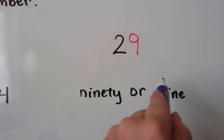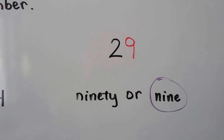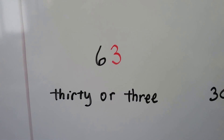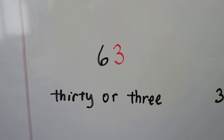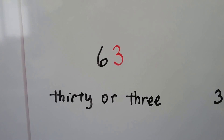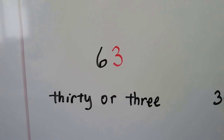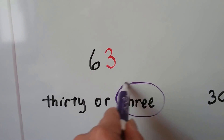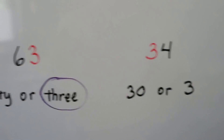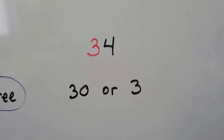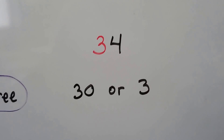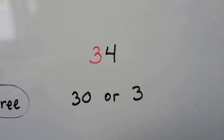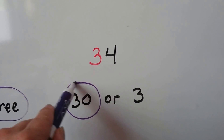How about this one — is the nine ninety or a nine? If you said nine, you're correct. It's in the ones place; it means nine. Is the three a thirty or just a three? It's in the ones place, so it means three ones.